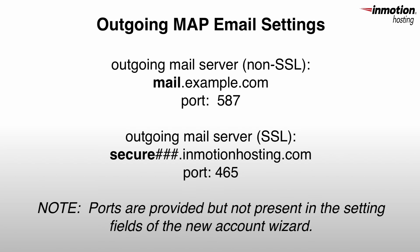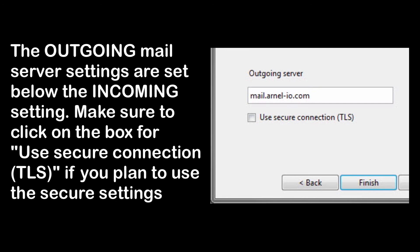The outgoing server is just like the incoming server if you want to use secure settings. For a shared server account, you would type in secure.servernumber.inmotionhosting.com. If you're going to be using secure settings with the outgoing server, make sure to click on the box labeled Use Secure Connection with TLS.